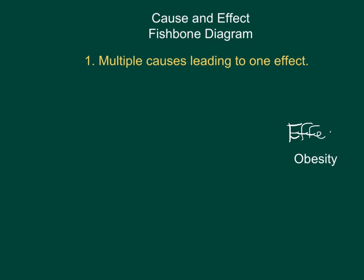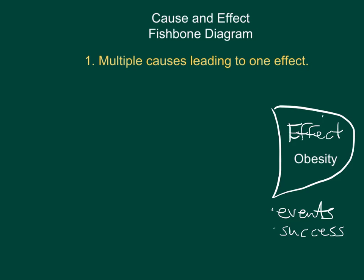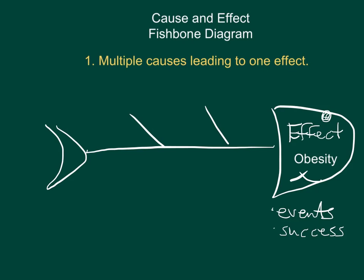The effect doesn't always have to be a problem — it can be an event, a success, or something you've achieved and want to explain how you got it. All different types of effects are possible. This diagram is called a fishbone diagram. Imagine the effect is the head of our fish, and then we have the back, the tail, and some ribs. Those ribs are the main causes leading to the effect — the causes go this way and lead to the effect.